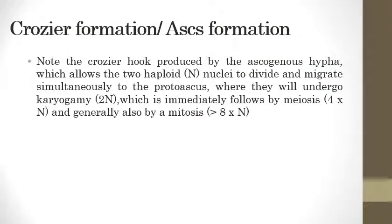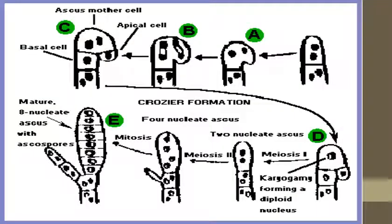The dominant diagnostic feature is crozier formation and ascus formation. Now we will see a diagrammatic representation. There is a short gap or interface between plasmogamy and karyogamy. In this small gap, formation of asci occurs — this process is called askogenesis, the formation of asci.